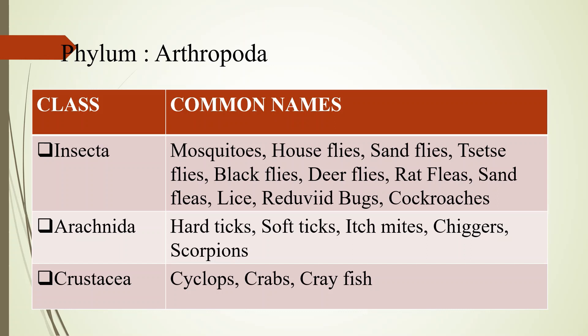Arachnida includes hard ticks, soft ticks, itch mites, chiggers, and scorpions. Crustacea includes cyclops, crabs, and crayfish. So the important classes are Insecta, Arachnida, and Crustacea.